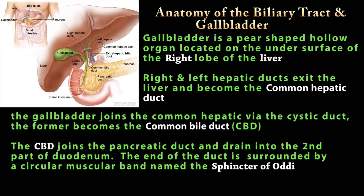The gallbladder is a pear-shaped hollow organ located on the undersurface of the right lobe of the liver. The bile produced by the liver is collected and conveyed by the common hepatic duct, which is connected to the gallbladder via a small duct called the cystic duct. The hepatic duct becomes the common bile duct and, along with the pancreatic duct, it empties into the small intestine at the duodenum. Within the wall of the duodenum, it is surrounded by a circular muscular band named the sphincter of Oddi.